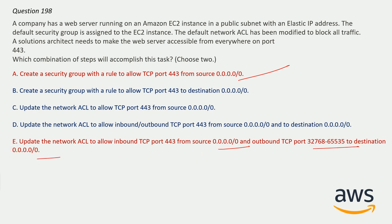Security groups are stateful, so an inbound rule alone is enough. But NACLs are stateless — essentially bi-directional. If you allow only incoming traffic, only incoming will be allowed, and if you allow outgoing traffic, only outgoing will be allowed. For example, if you allow traffic from source A to destination B using a NACL, A can reach B, but that doesn't mean traffic from B will also reach A — you have to separately allow that rule. So options A and E are correct here.